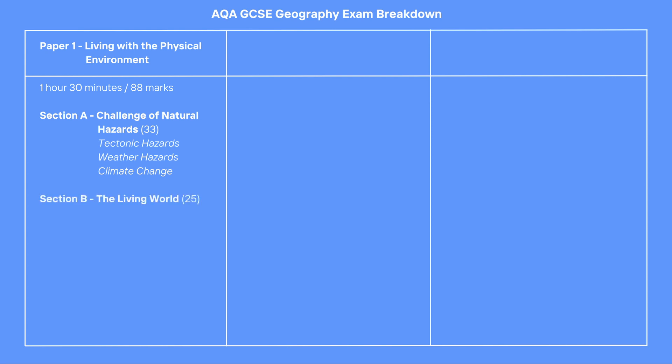Section B is next. It is about the Living World, including tropical rainforests, and then you answer questions about either hot desert environments or cold environments. You are only expected to have studied one of them. 25 marks are available in this section.